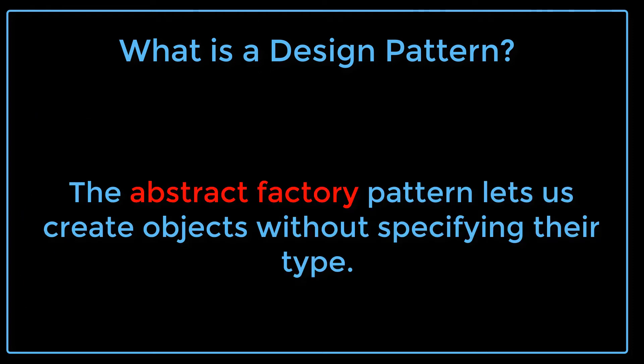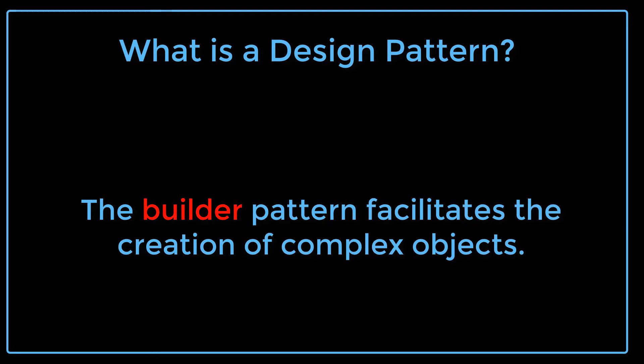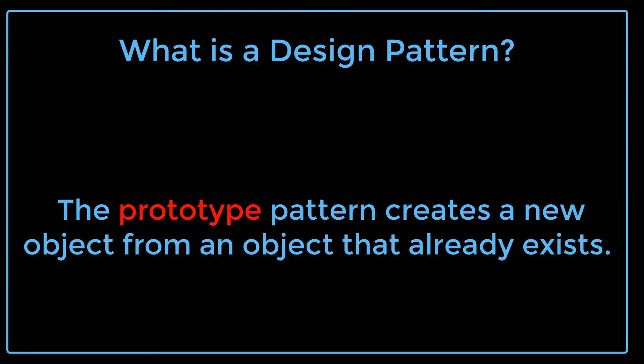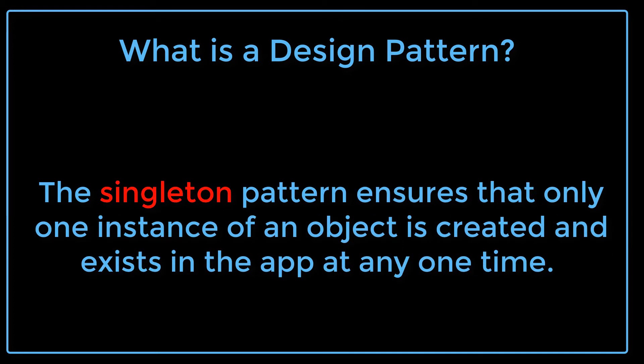The Abstract Factory pattern lets us create objects without specifying their type. The Builder pattern facilitates the creation of complex objects. The Factory Method pattern creates objects without specifying the exact classes to create. The Prototype pattern creates a new object from an object that already exists. The Singleton pattern ensures that only one instance of an object is created and exists in the app at any one time.